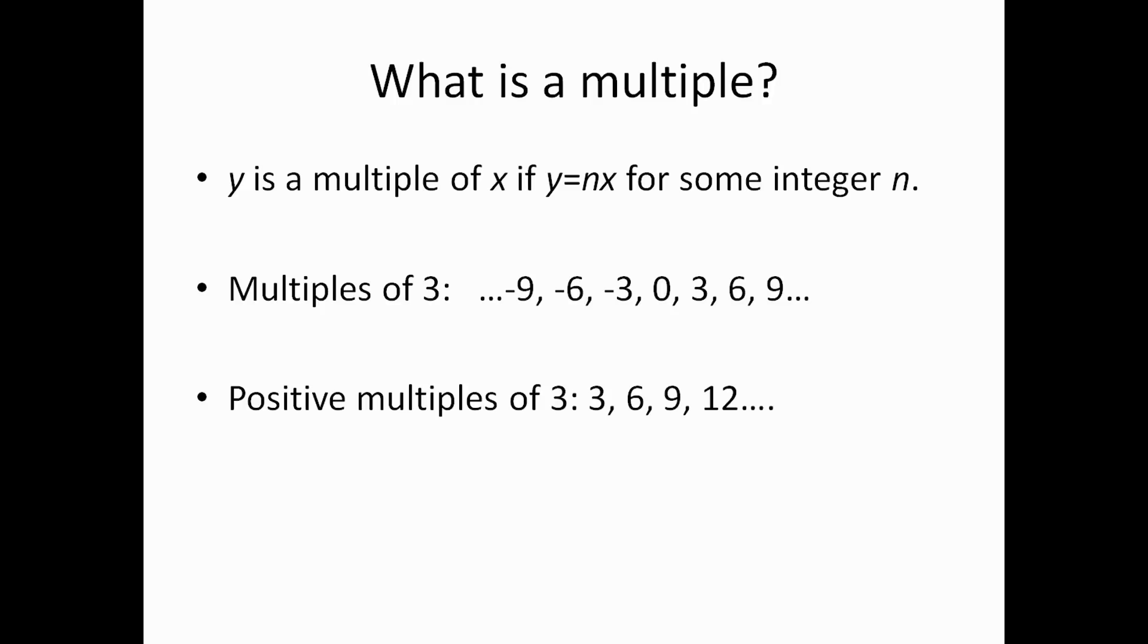And another way to write those positive multiples is in this way. As you can see, instead of writing 3, 6, 9, and 12, I've got 3 times 1, 3 times 2, 3 times 3, 3 times 4, and so on. So, that way you can kind of connect it back to that definition, that the multiple is 3 times some other integer.